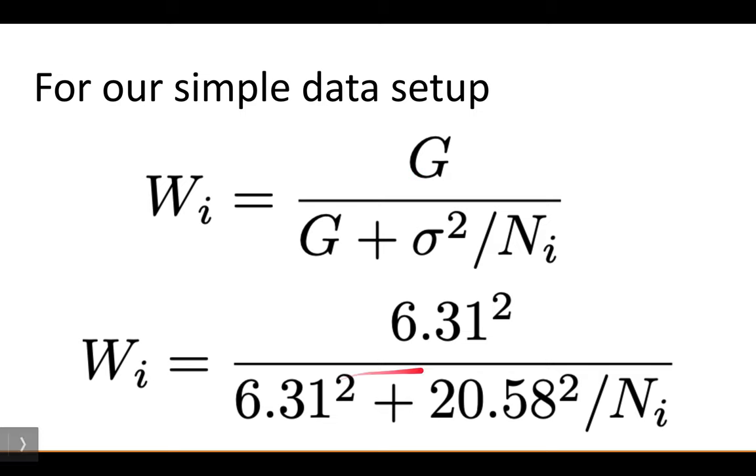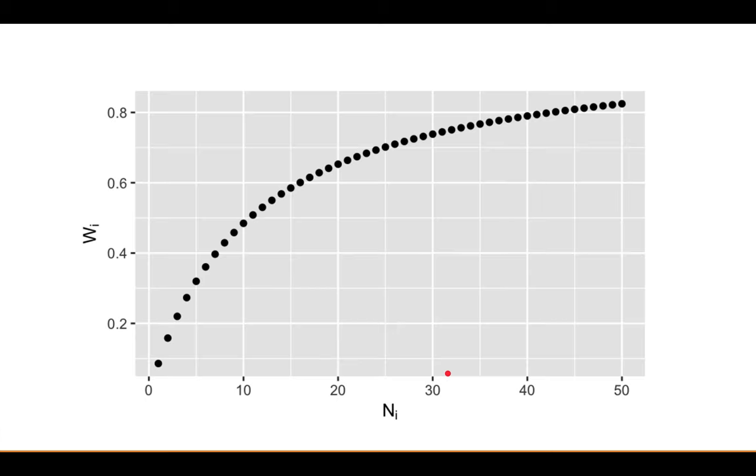Let's use the numbers from the simulated data and see what this weight looks like for a range of sample sizes. So here's that weight, here's the sample size, and obviously as the sample size increases, this weight will increase. So you can see a subject with 10 observations will have a 50-50 split between the OLS estimate and the fixed effects estimate from the mixed model, whereas a subject with 50 data points will be 80% OLS and about 20% mixed model estimate.